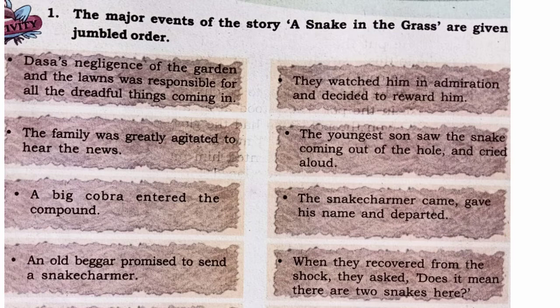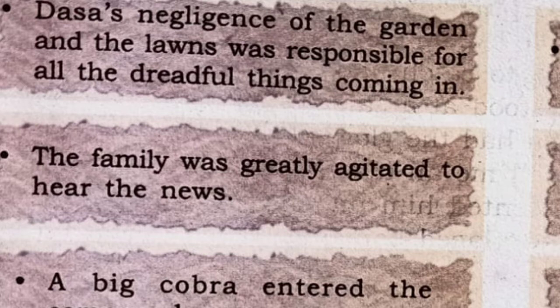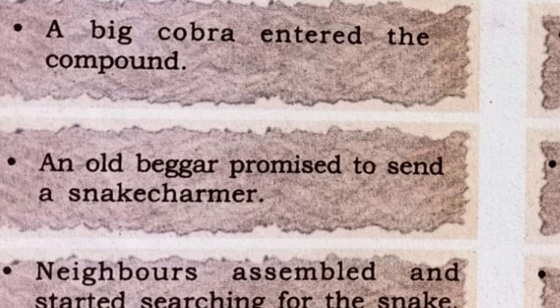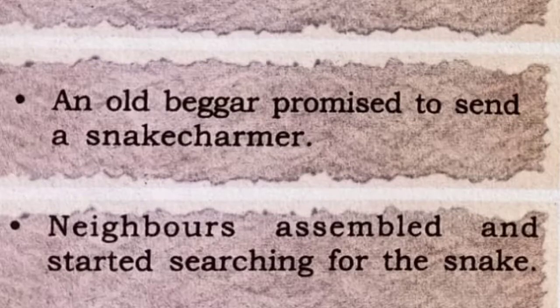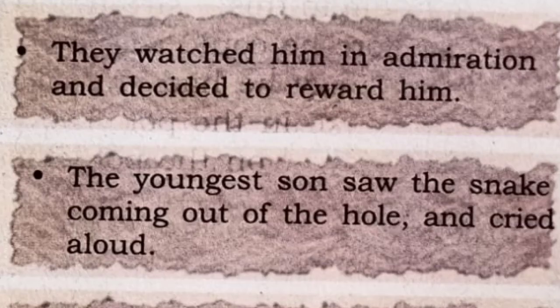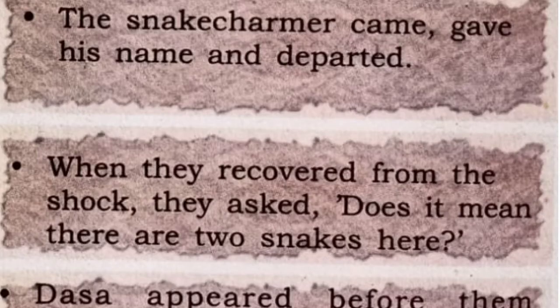The jumbled events are as follows. Dasa's negligence of the garden and the lawns was responsible for all the dreadful things coming in. The family was greatly agitated to hear the news. A cobra entered the compound. An old beggar promised to send a snake charmer. Neighbors assembled and started searching for the snake. They watched him in admiration and decided to reward him.